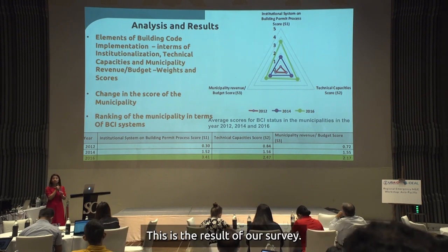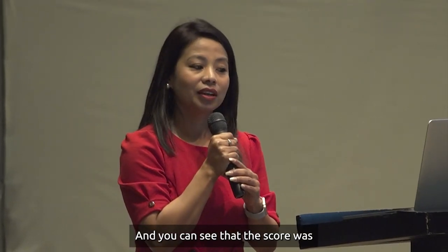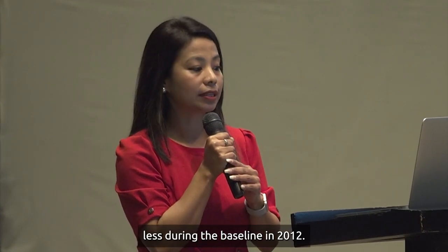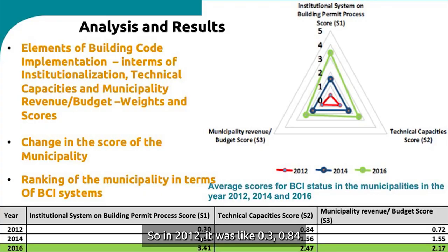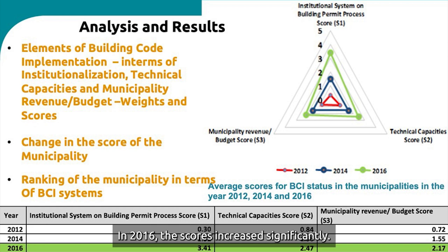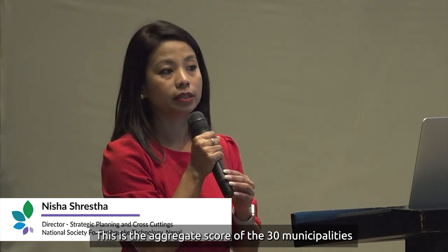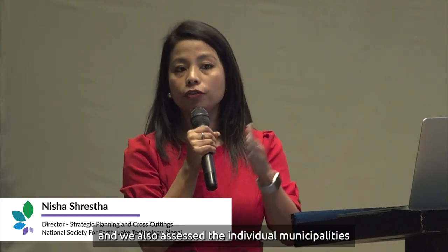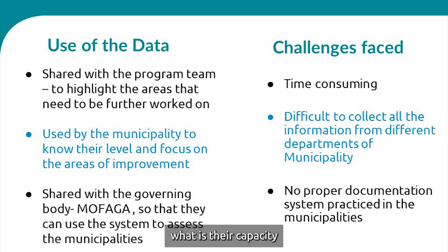The figure shows the results of our survey. The red line at the center is the baseline data. The score was very low during the baseline in 2012 — around 0.3, 0.84, and 0.72 across the three dimensions, scored on a scale of five. An increment was seen in 2014, shown by the blue line, and towards the end in 2016, scores increased significantly. There was a systematic change in the municipalities we worked with. This is the aggregate score of the 30 municipalities, and individual municipalities were also ranked on their capacity for building code implementation.